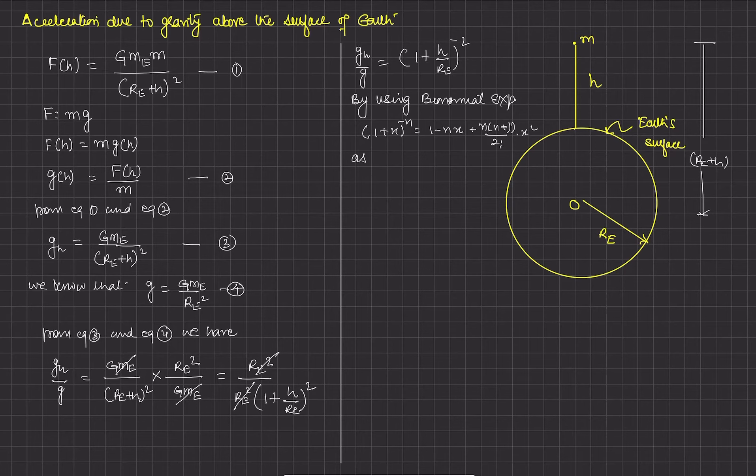But we know that the height above the surface of earth is very much less than radius of earth, so h upon radius of earth is very much less than 1. Therefore, higher powers can be neglected. We will neglect this part.